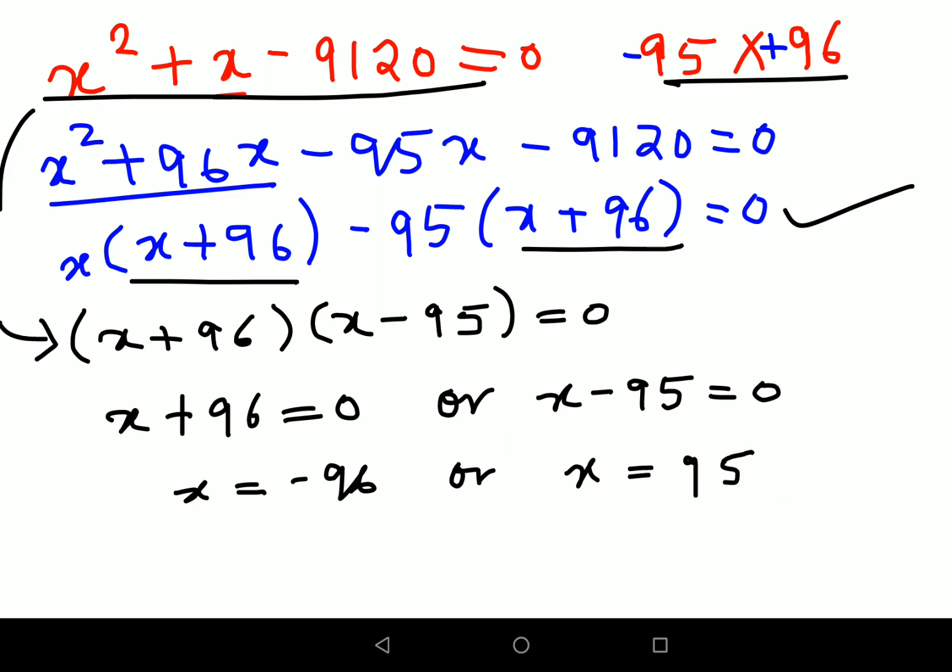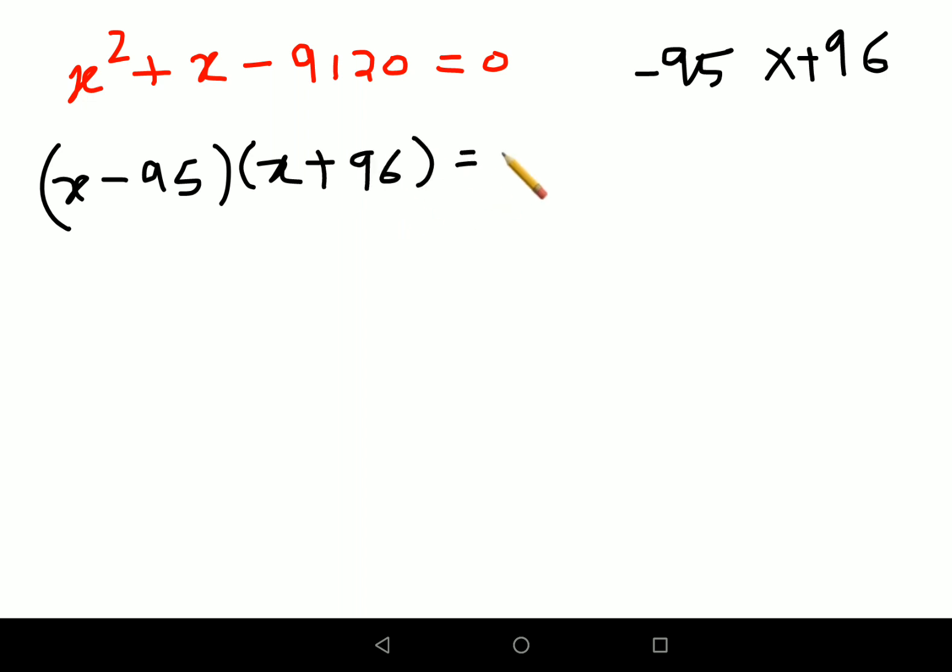Now coming to the point where I told you that you can literally come to this particular step. How you can do that? See, you all realized that the question had two factors. We knew the two factors are 95 and 96. Now we wanted a +1, so we will do +96 and -95. So all you had to do was just do (x - 95)(x + 96). That way also you can say the value of x is -96 or x is 95. I hope you have understood how to solve these kinds of questions literally in your mind now.